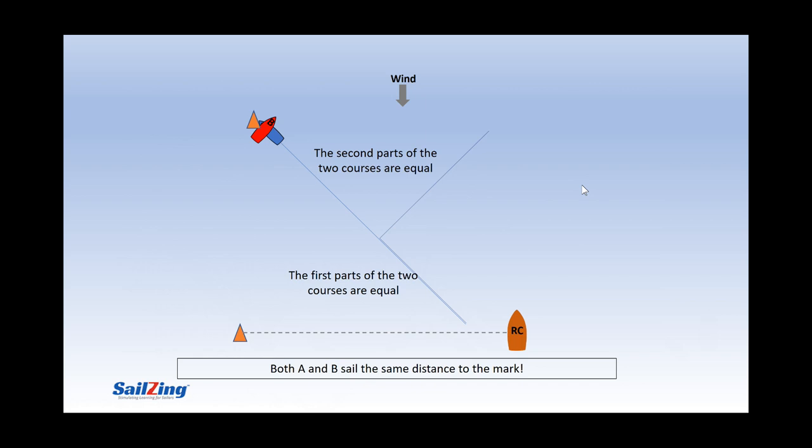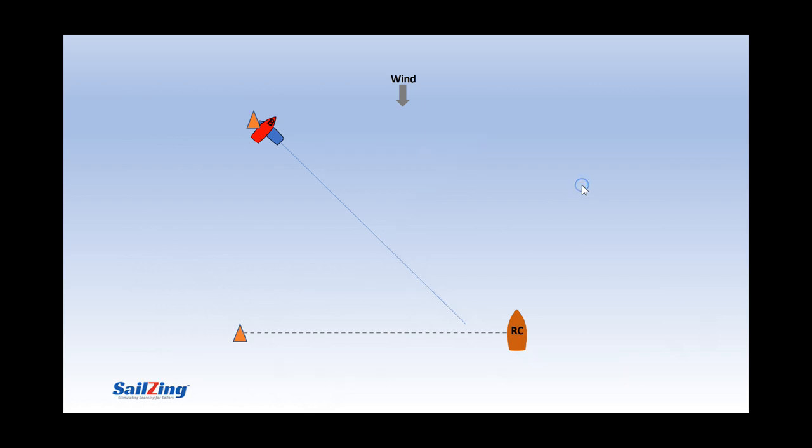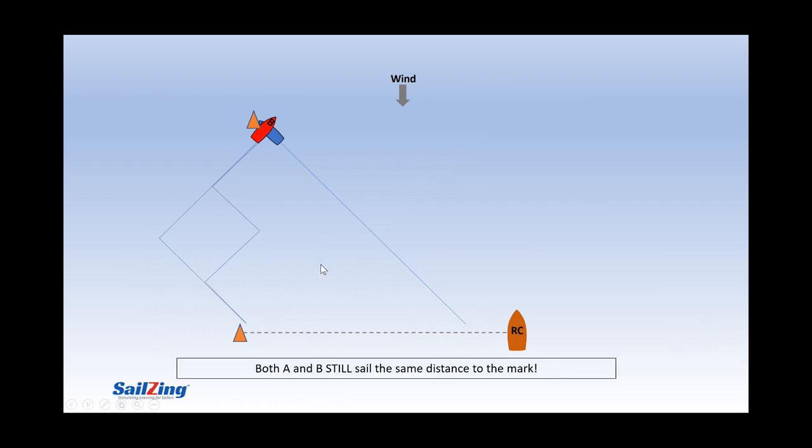Now what if B can't make up her mind and decides to throw in two more tacks? Does this increase B's sailing distance? Let's look at B's one tack course and three tack course together. This is a rectangle right here. This set of segments are equal and this set of segments are equal. So again, the distance sailed is not affected.